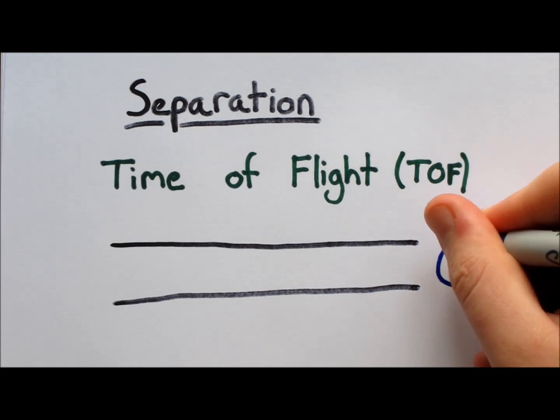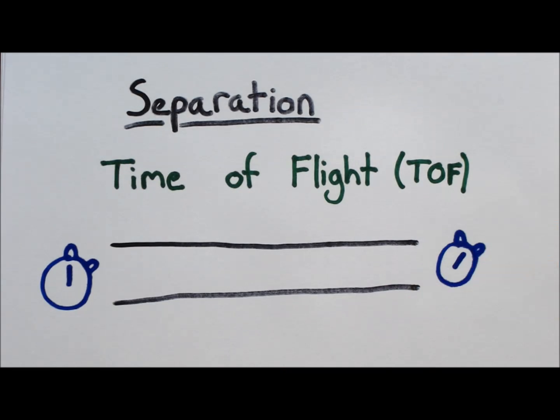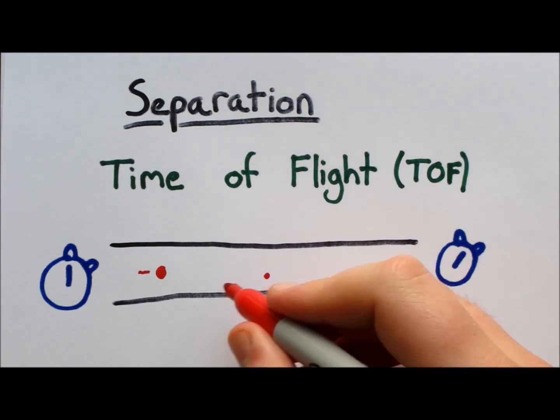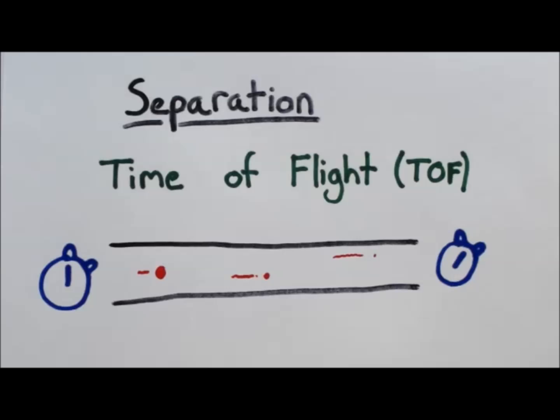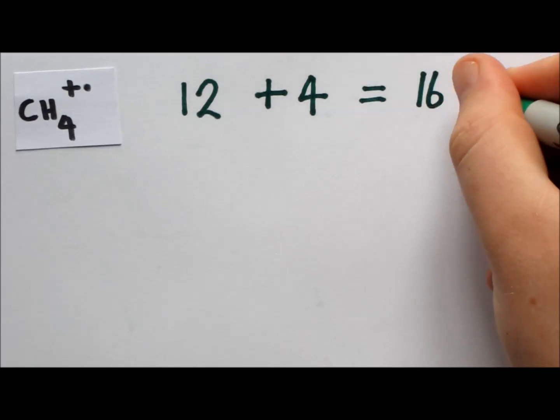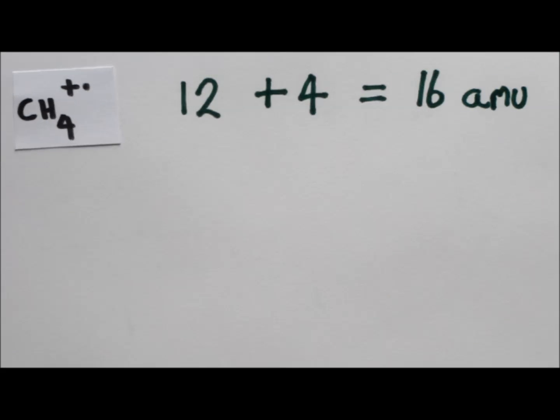This involves accelerating ions and letting them separate as they reach different speeds down a flight tube. Let's look at this using the methane ions we've just formed. Firstly, we want to consider the mass of each fragment. This is easily done by adding together the atomic mass of the constituent elements of the fragment. Carbon has atomic mass 12, and hydrogen has atomic mass 1.